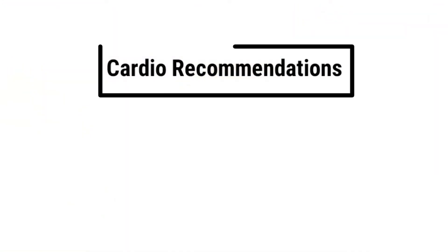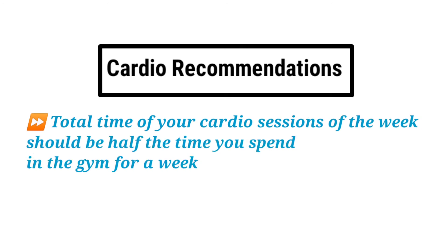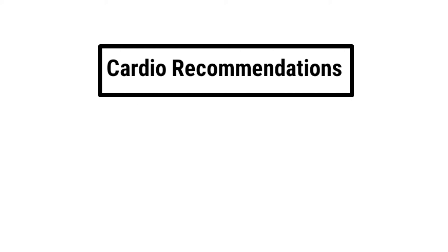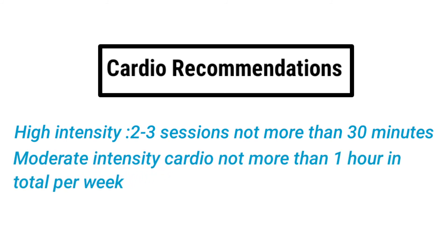Here is a practical recommendation. You have gym sessions for six hours every week. You have a total cardio session allocation of three hours. That means you do high-intensity interval training two to three sessions per week, not more than 30 minutes each. That means moderate intensity cardio is not more than one hour per week. For the remaining cardio sessions, you can use low-intensity cardio sessions.